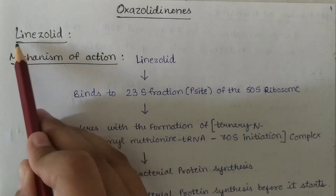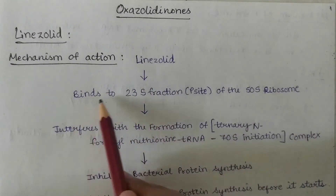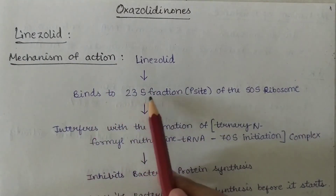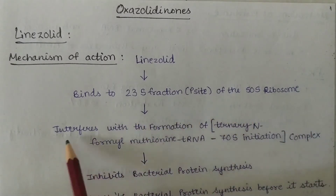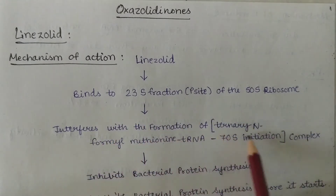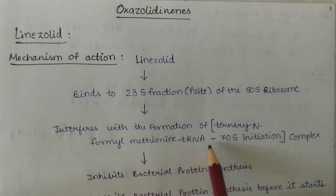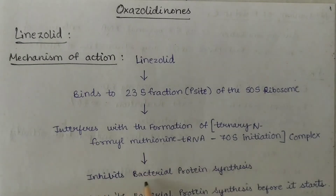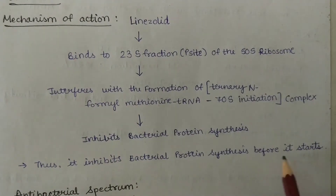The drug is linezolid. The mechanism of action: linezolid binds to the 23S fraction, the P-site of the 50S ribosome, and interferes with the formation of the tertiary formyl-methionine tRNA 70S initiation complex, thus inhibiting bacterial protein synthesis before it starts.